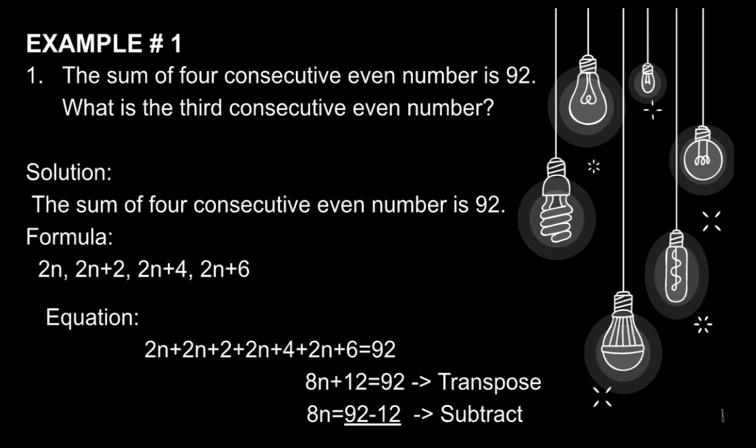Since ang hinahanap natin dito ay consecutive even number, then ang gagamitin natin na formula is yung nasa consecutive even integers, which is the 2n, 2n+2, 2n+4, and 2n+6. At ito naman ang ating equation: 2n+2n+2+2n+4+2n+6 is equals to 92.